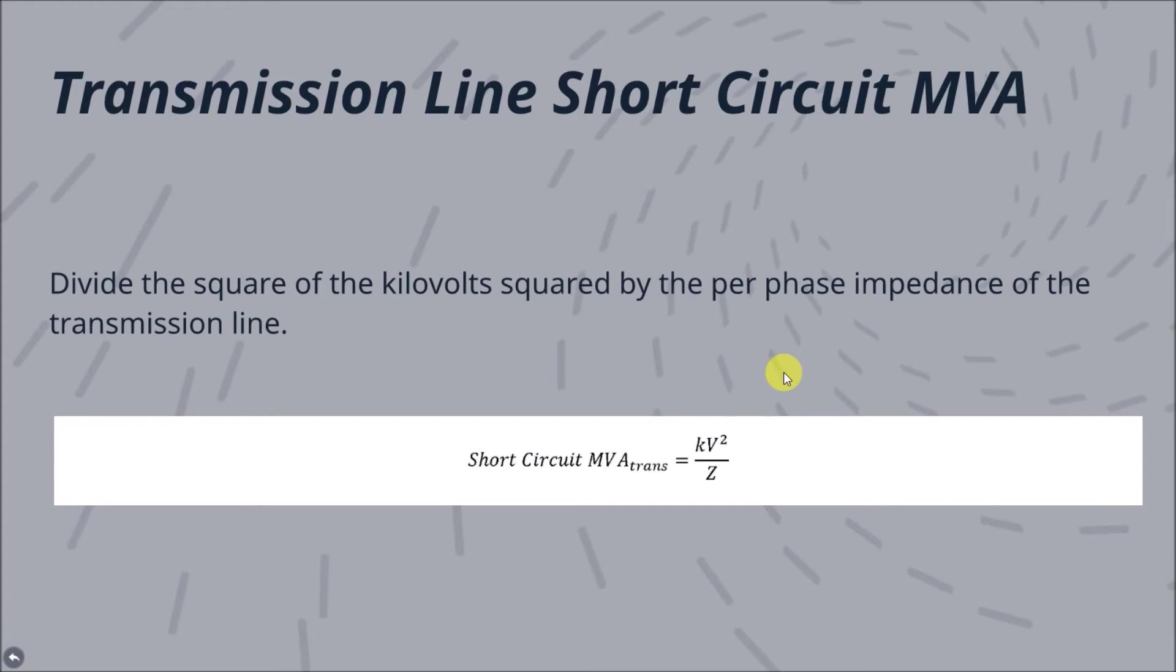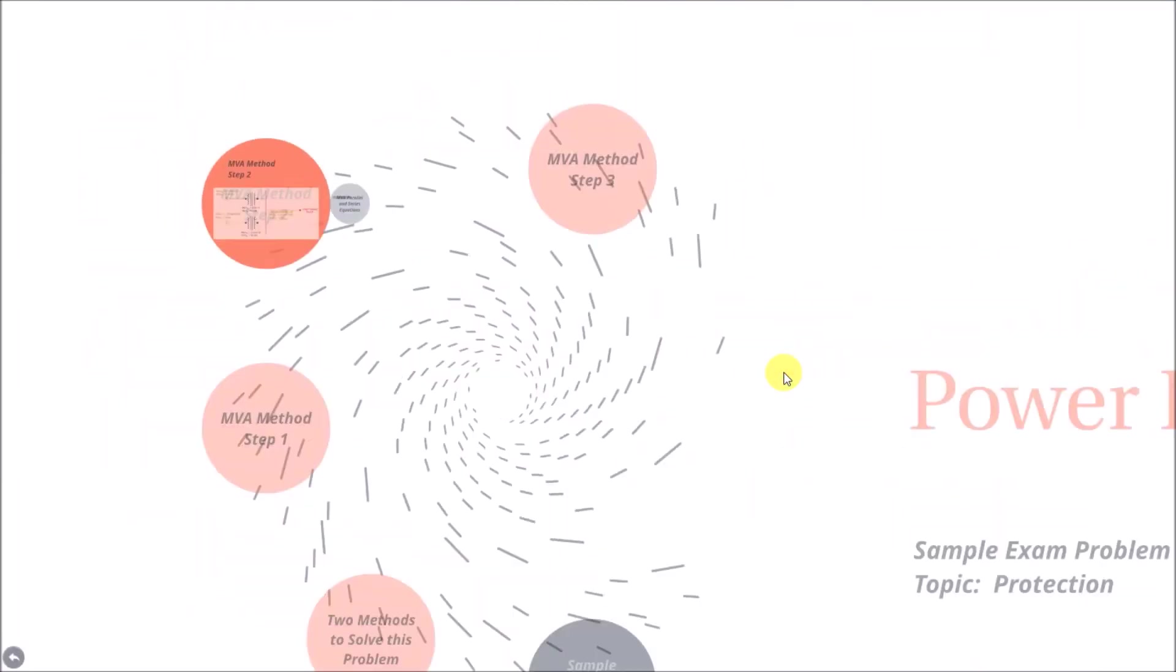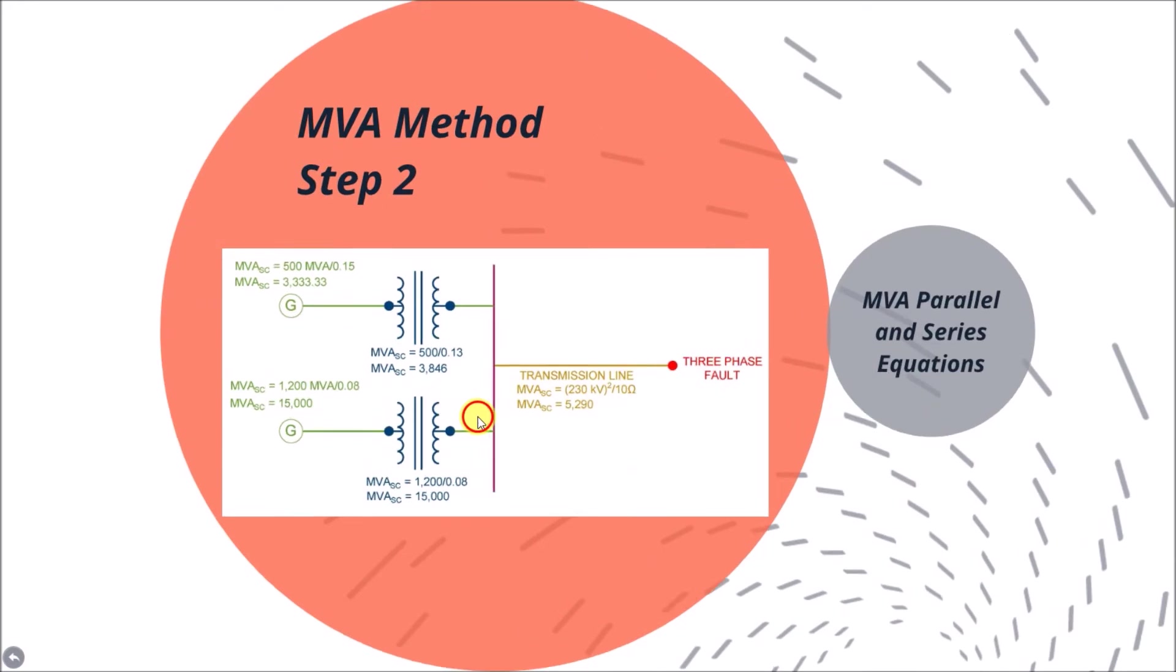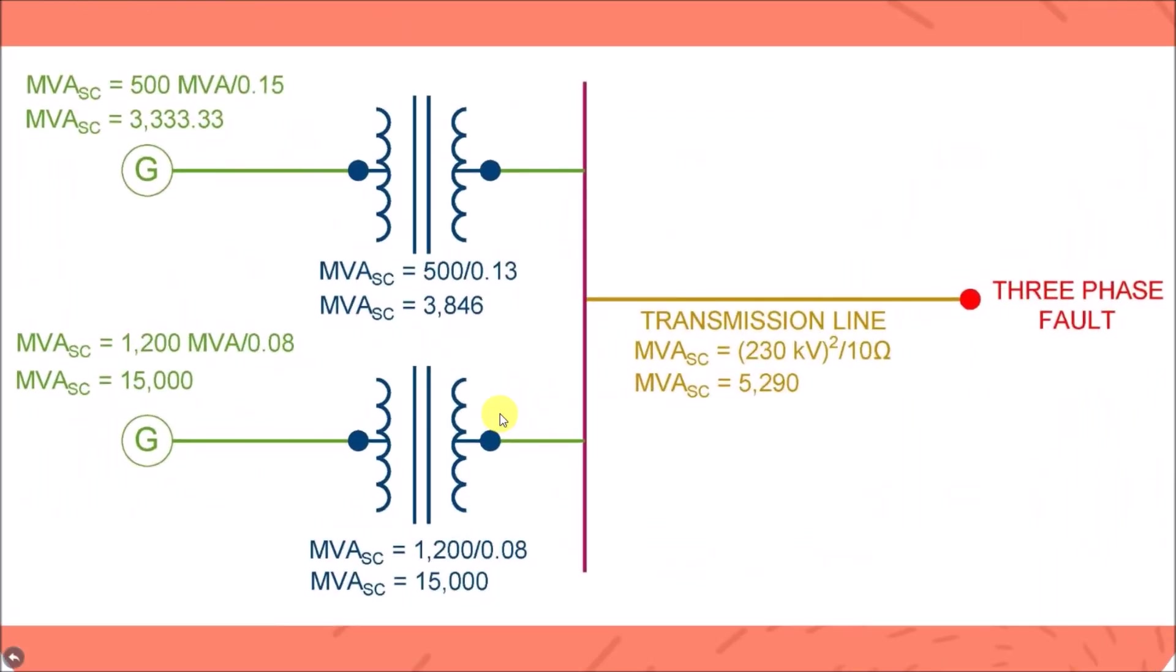The short-circuit current in a transmission line is simply a function of the voltage in the line and the impedance in the line. The short-circuit MVA value is found by taking the rated voltage in kV squared and dividing that value by the per-phase impedance. The units will result in MVA for the short-circuit MVA of the transmission line. If you would like more information on how the unit conversions work, please see the website in the description.